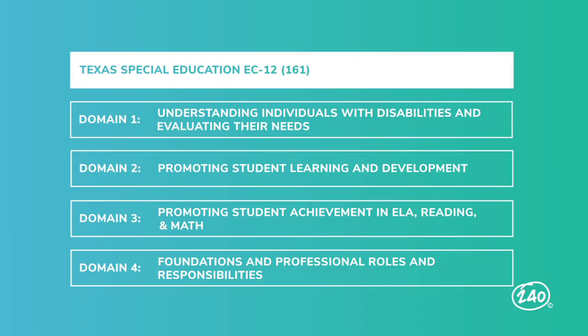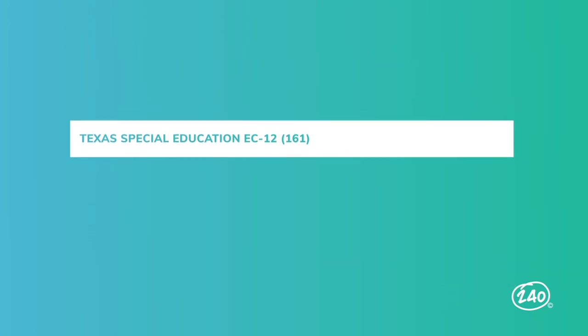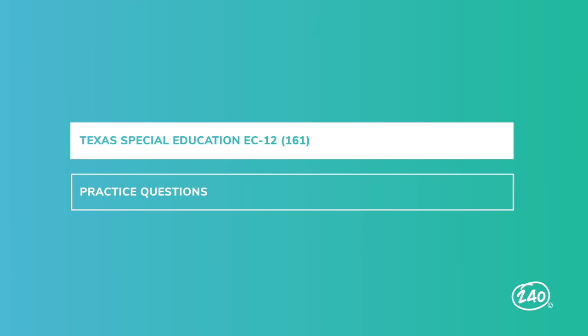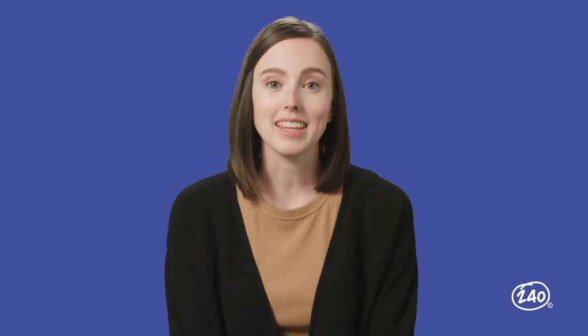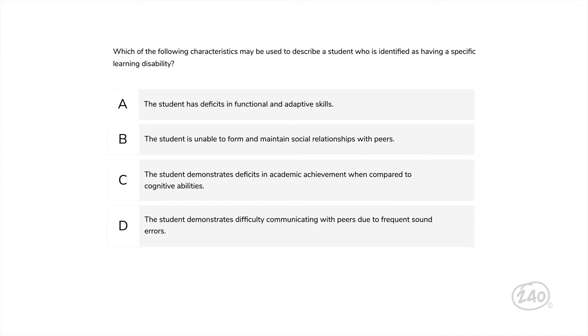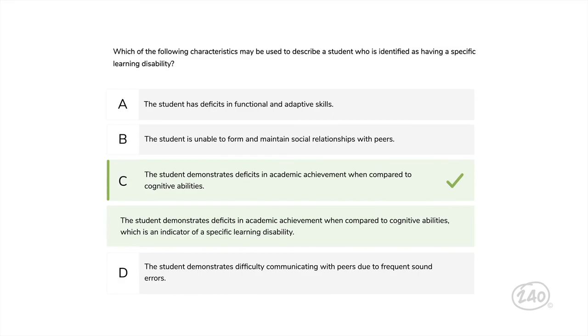Now that we've gone over the big concepts in our four domains, let's look at some practice questions. If you want a lot of practice questions, you can click the free practice test below — at the end, you get a score report. Here's one where we need to classify disabilities. This question asks us to identify a trait of a student with a specific learning disability. The student demonstrates deficits in academic achievement when compared to cognitive abilities — this is an indicator of a specific learning disability, so this is the correct answer.